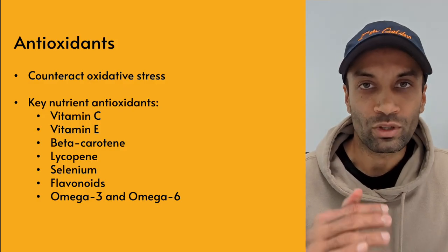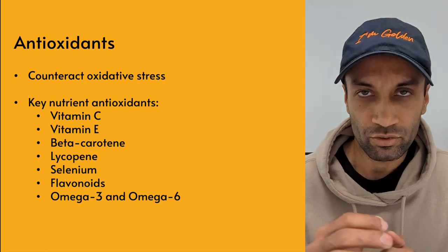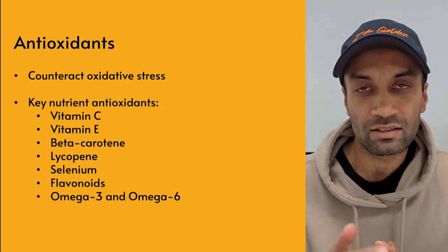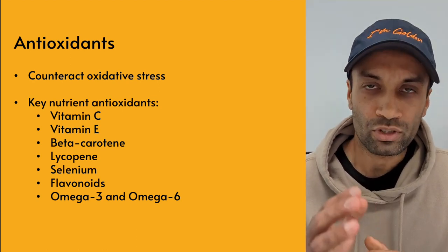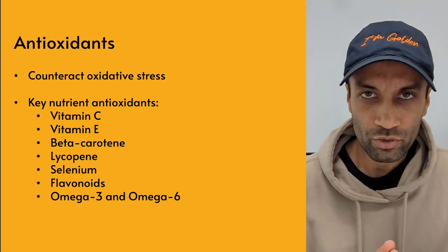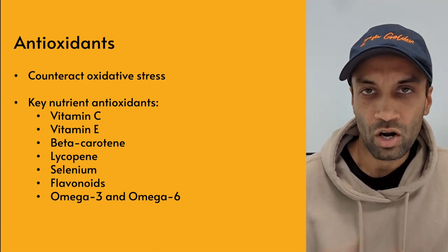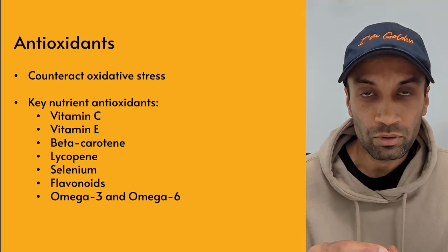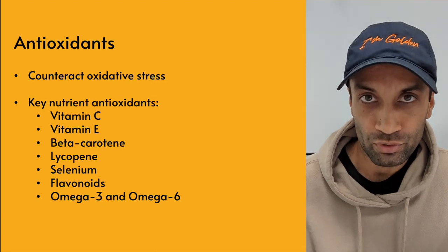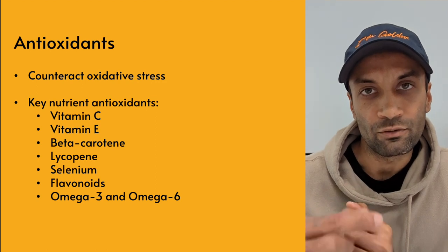The body has several mechanisms to counteract oxidative stress. It produces antioxidants naturally, and it uses antioxidants supplied through food. The role of antioxidants is to neutralize excess free radicals, to protect the cells against their toxic effects, and to contribute to disease prevention. Nutrient antioxidant deficiency is one of the main causes of numerous chronic and degenerative diseases. Antioxidant supplements do not have the same composition as antioxidants found in natural foods, so it's not clear that supplements offer the same benefits as antioxidants in food.